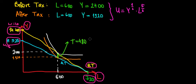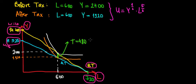Why would we have excess burden? Excess burden arises because we change our consumption of goods because of the tax. We have an income effect — a loss in utility because we have less money to spend — but we also have a substitution effect, because we are forced to consume the good that is not taxed. We are changing our consumption behavior, and we want to know what that change is. We're looking for that excess burden, and we'll calculate it in two steps.